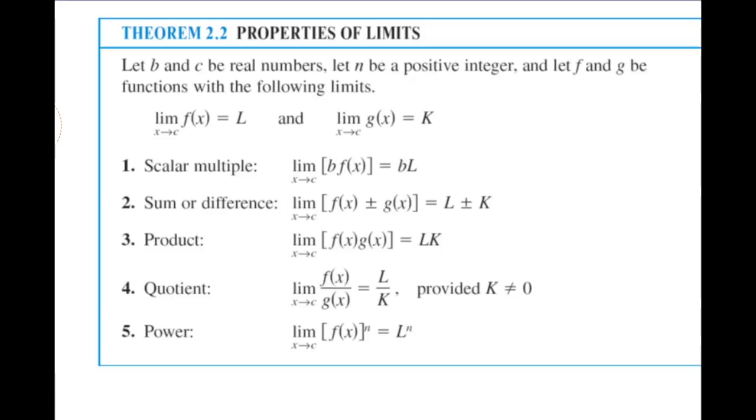So here are some examples. Now this is going to be a little bit hard to follow sometimes because they use a bunch of letters, but we'll see if we can get through it. It says, let b and c be real numbers, let n be a positive integer, and let f and g be functions with the following limits. So if the limit of f(x) as x approaches c is equal to L, and the limit of g(x) as x approaches c is equal to K.